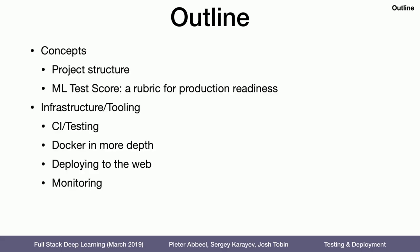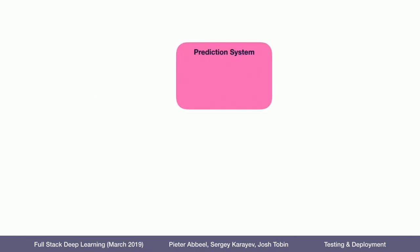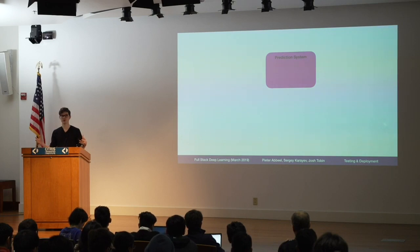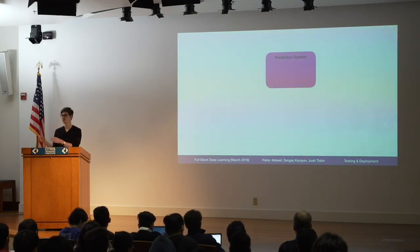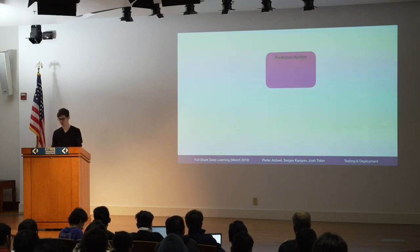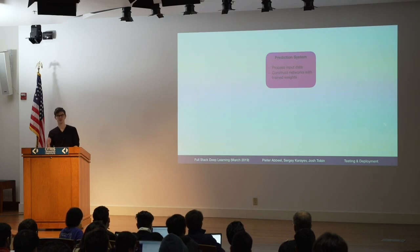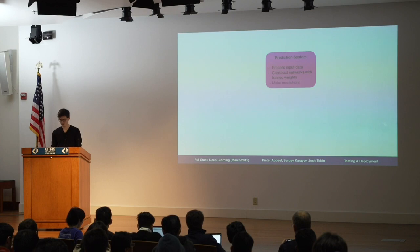The first thing I want to start with is the project structure — how should we structure machine learning codebases? What should be tested? How should we name different things? The goal of a machine learning codebase is to produce a prediction system: a system that takes input, constructs networks with trained weights, and makes predictions using that code and those weights.